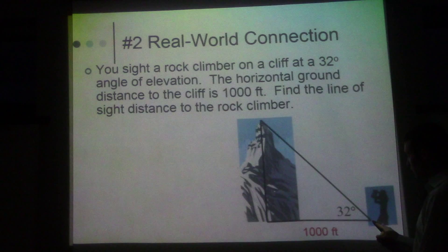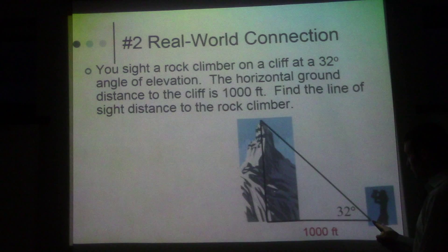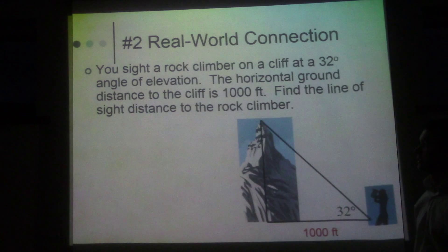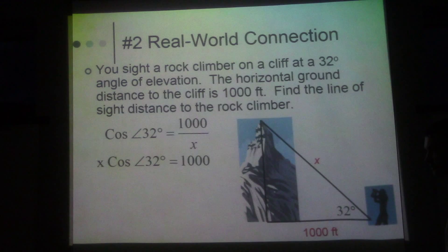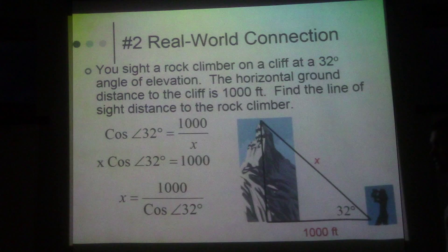You sight a rock climber on a cliff at an angle of 32 degrees. The horizontal ground distance to the cliff is 1,000 feet. So you're looking here, you look up, you see it like this. You look up from here, this is 32 degrees. We have this distance from you to the cliff, if we were to go there, the horizontal distance would be 1,000 feet.